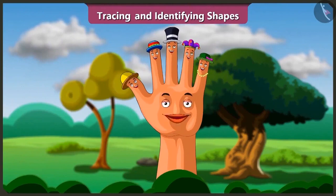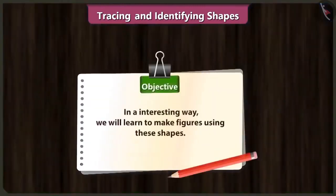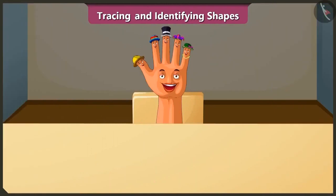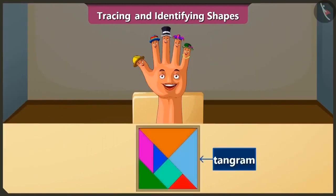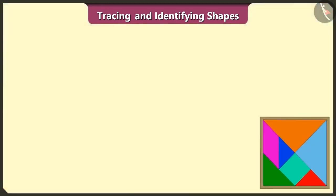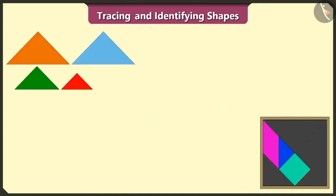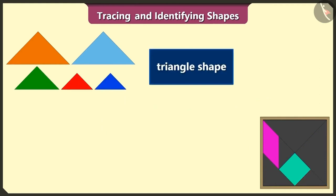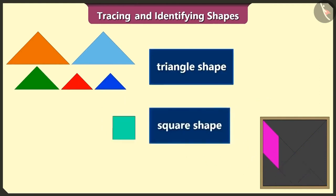Friends, we have learned to identify and trace shapes. Today in an interesting way, we will learn to make figures using these shapes. Look friends, this is a tangram. There are a total of 7 shapes in it. This tangram is made of 1, 2, 3, 4 and 5 triangle shapes, 1 square shape and 1 quadrilateral.